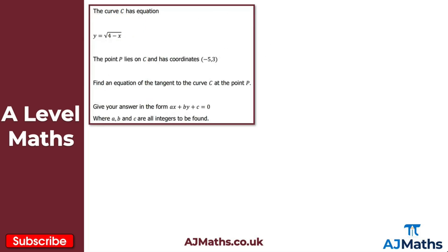Moving on to question 2. We've been given the curve C with equation y equals the square root of (4 minus x). The point P lies on C with coordinates (−5, 3), and we're asked to find the equation of the tangent to curve C at point P.